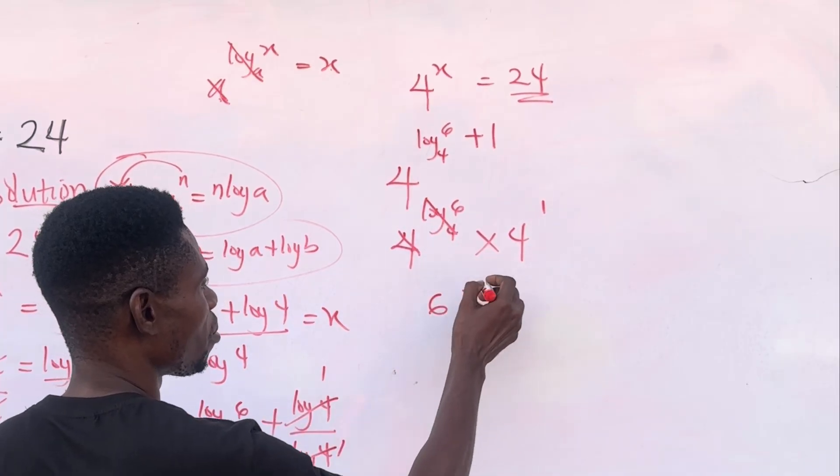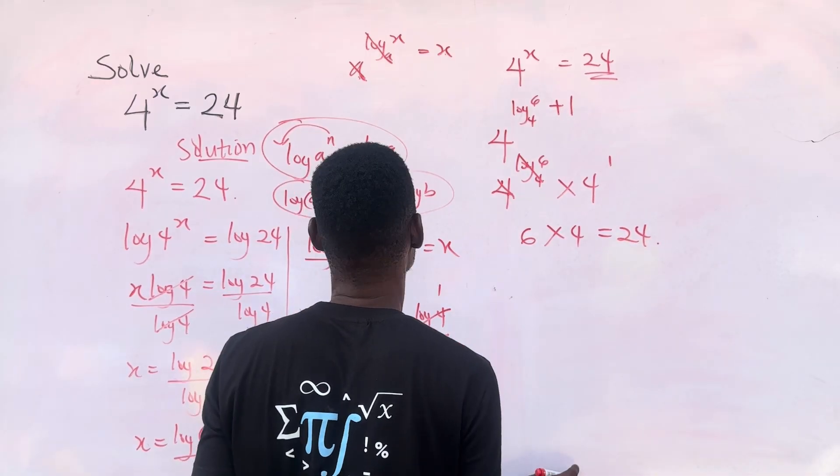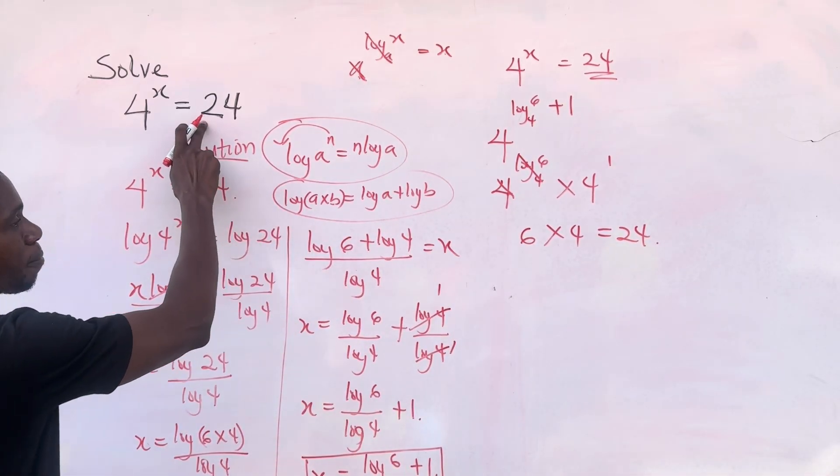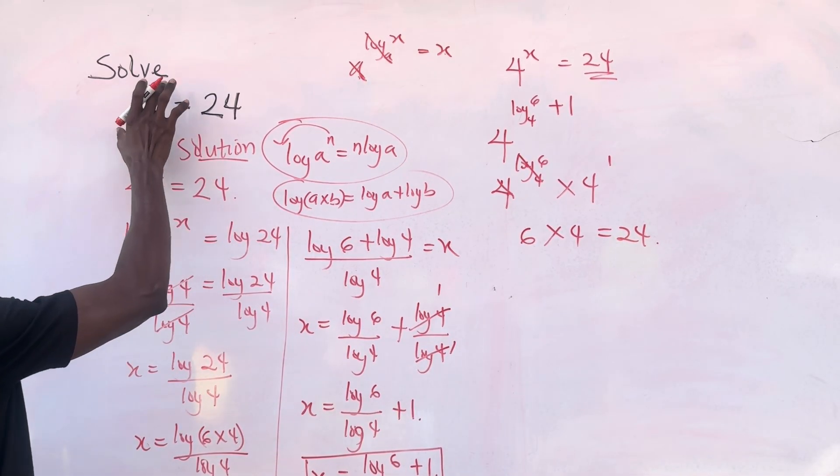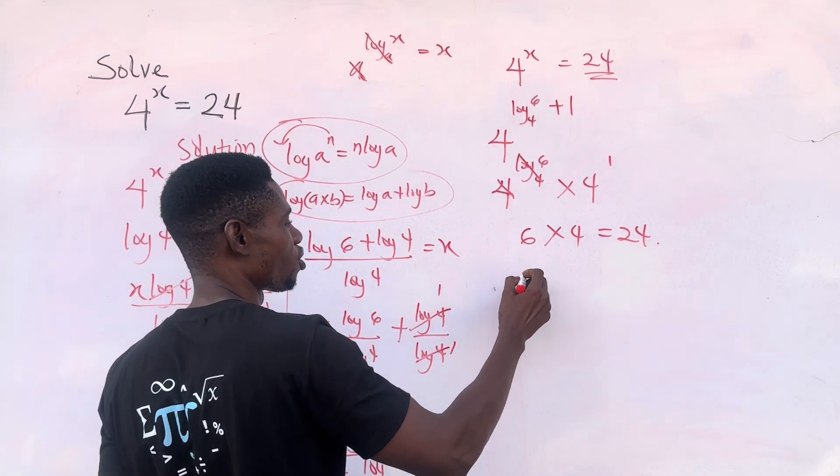So this will give us 6 multiplied by 4. And 6 multiplied by 4 is 24. And if you bring it back, our 4 raised to our x is giving us 24 and it's equal to 24 here. So this is correct.